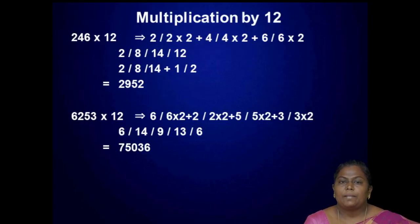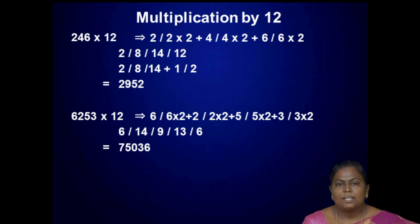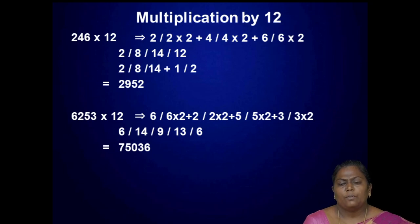Next, multiply by 12. This is also a pairing method. For example, take the number 246: take the first digit 2, then 2 into 2 plus 4, then 4 into 2 plus 6, then 6 into 2. This gives 2, 8, 14, 12. Handling carries — adding previous digit by 1 for values over 9 — we get 2952.